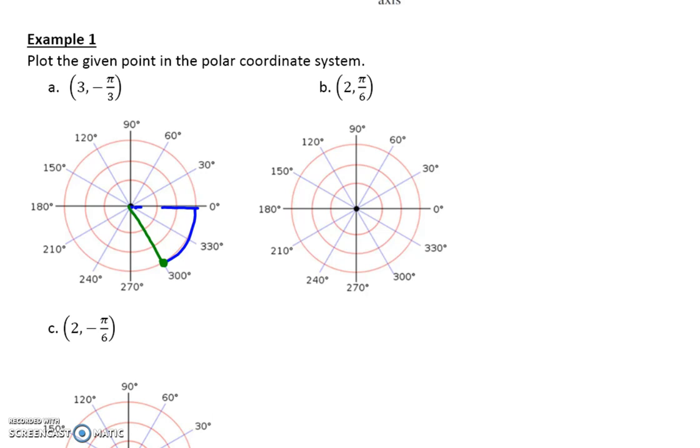Now for B, again, we're coming out to 2. And then we're going pi over 6, which is the same as 30 degrees. So you're rotating that point 30 degrees. And so you're going to have this point right here with your directed line segment there. Really pretty easy.